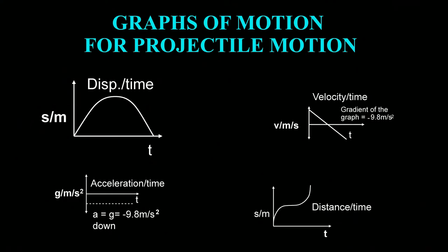The last graph is the distance versus time graph. The distance versus time graph looks like two parabolas combined together — a polynomial graph. You can draw a tangent to find the gradient, and in each case the gradient equals the gravitational acceleration, which is a constant.